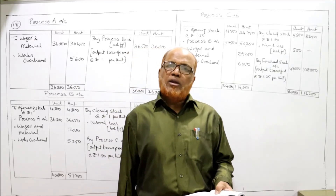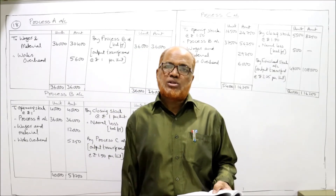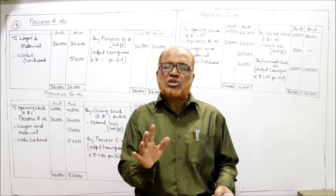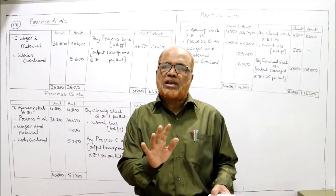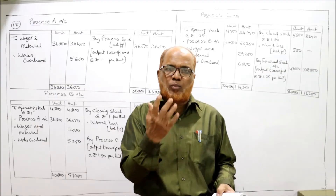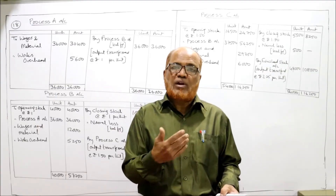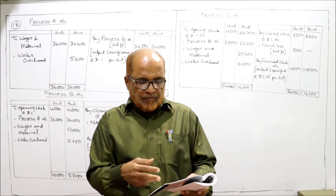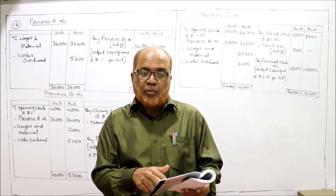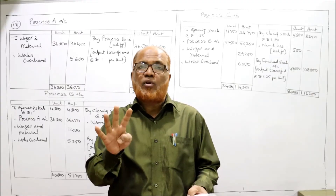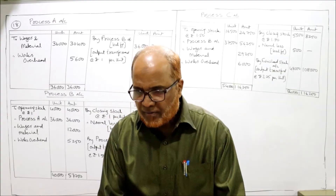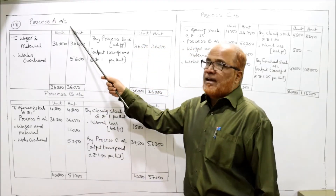In this problem, normal loss is not directly given — we have to find it out. For process A there is no opening and no closing stock, so no normal loss; whatever is the input is the same as the output. For process B, we need to find out the normal loss because we are getting an input of 36,000 but an output of 37,500, and there is an opening stock of 4,000 and closing stock of 1,000. That is why we have to work it out.